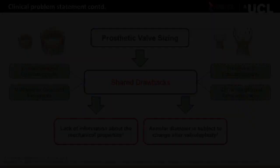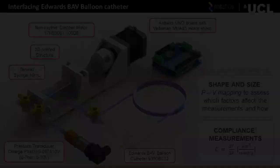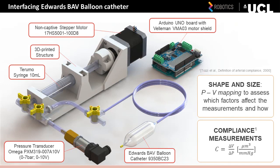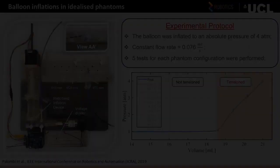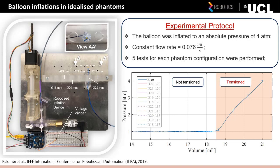We have looked into the development of a valvuloplasty robotic balloon catheter capable of determining the size and mechanical properties of the aortic annulus, which would allow extracting additional relevant information from a device already part of the TAVI procedure. We developed a robotic system capable of controlling balloon inflation and constantly acquiring intra-balloon pressure and volume data. The system is composed of a rapid prototype syringe pump, a controller equipped with a motor shield and an absolute pressure transducer, interfaced with a non-compliant 23 mm balloon catheter. The robotized syringe pump was used to inflate the balloon inside different idealized annular phantoms, obtained by machining acrylic plates with different thicknesses.